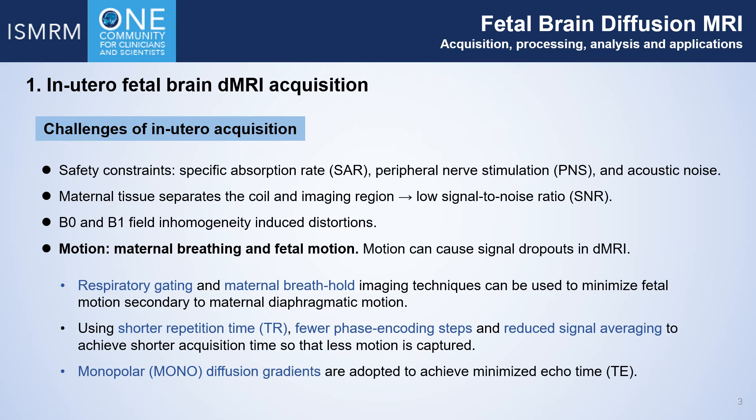The acquisition of in-utero dMRI is especially challenging due to several factors. Safety concerns including SAR, PNS, and acoustic noise constrain the scanning protocols. The maternal tissue that separates the coil and imaging region causes low SNR. It also leads to stronger field inhomogeneity-induced image distortions. Of particular concern is the motion artifact induced by maternal breathing and random fetal motion, which can cause signal dropouts in diffusion MRI.